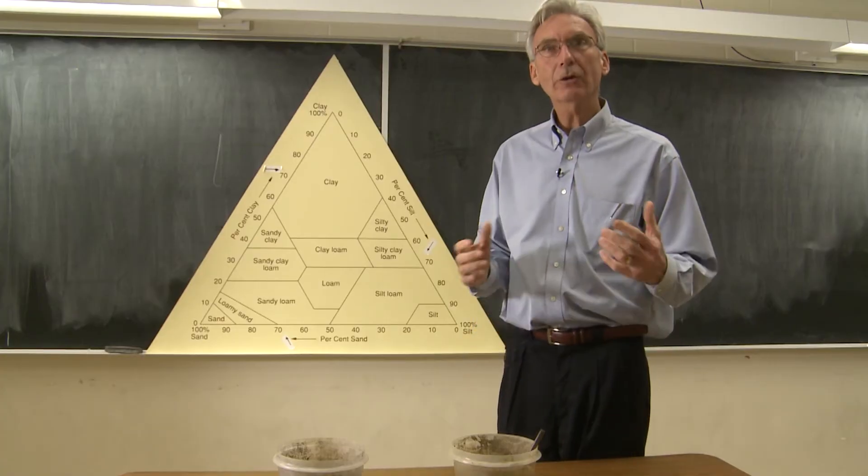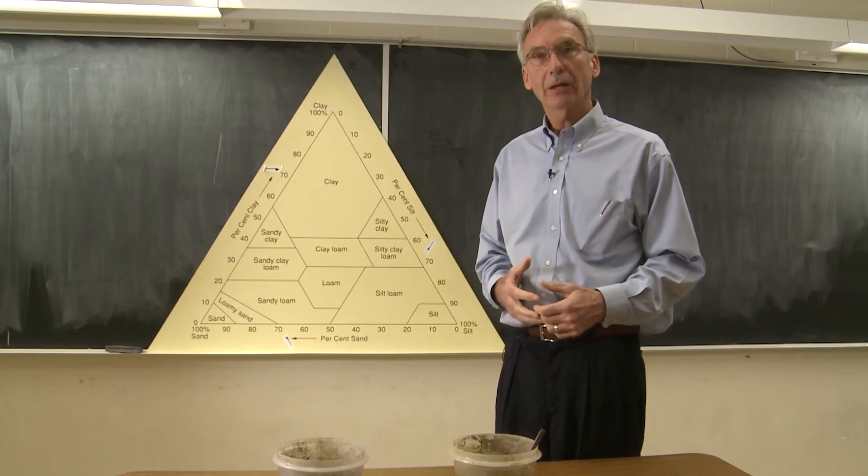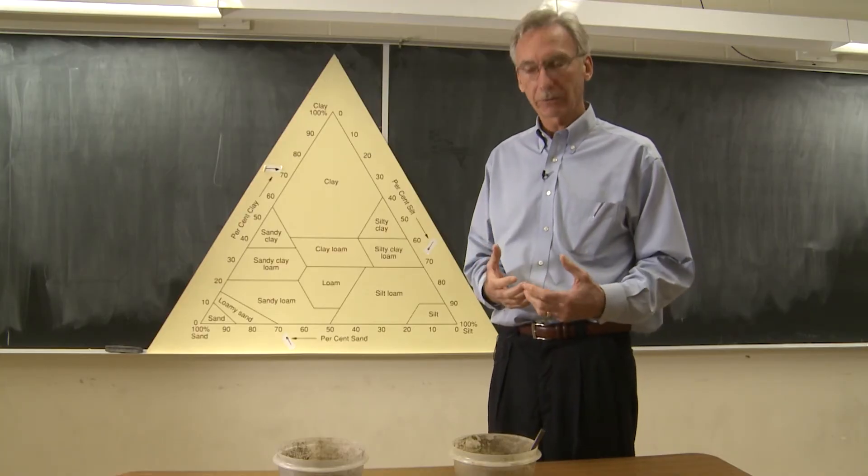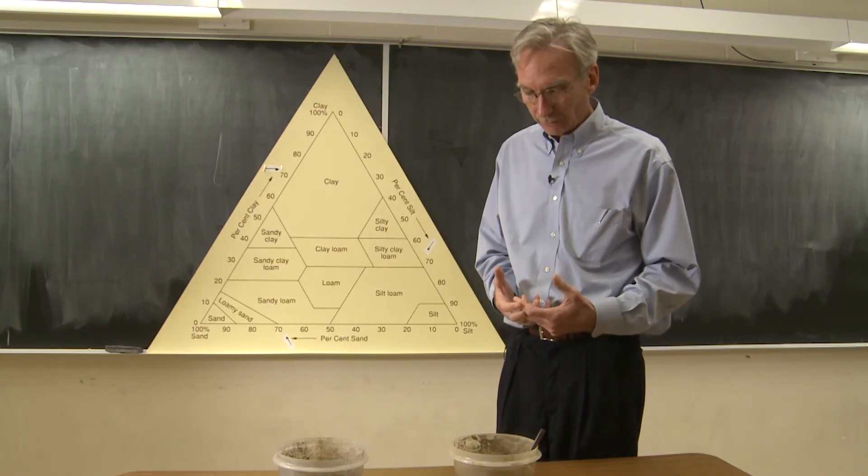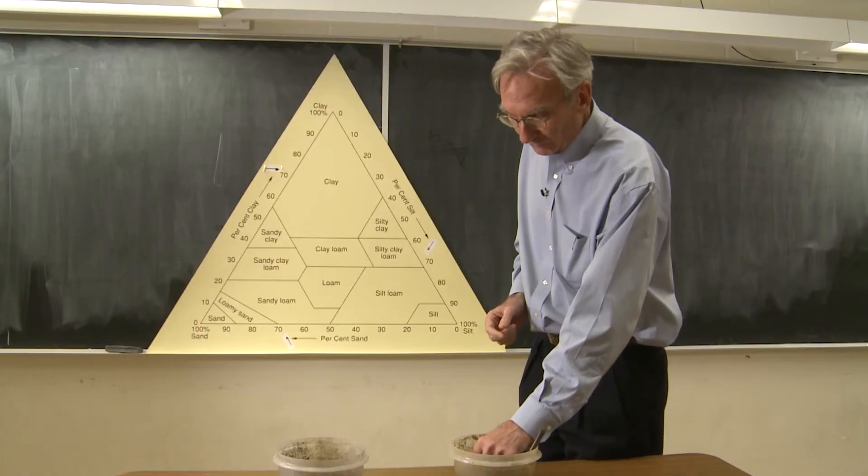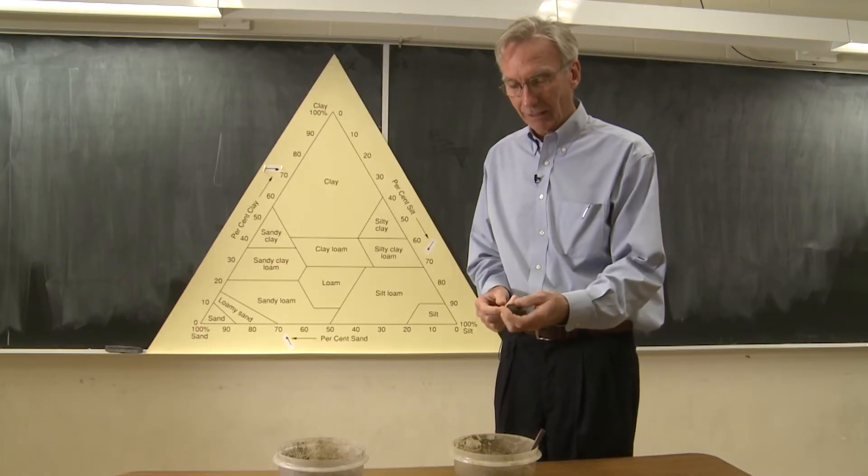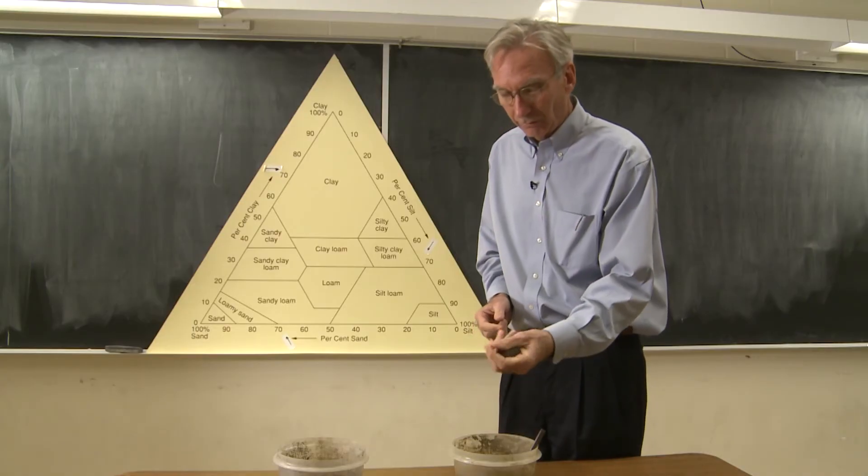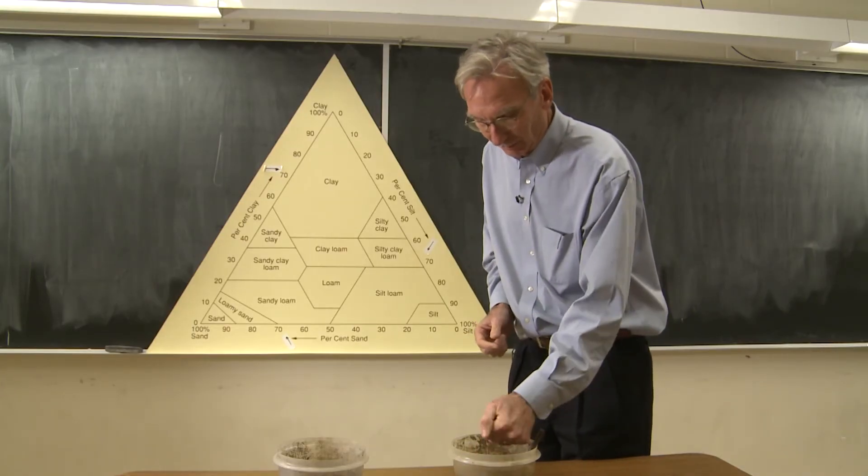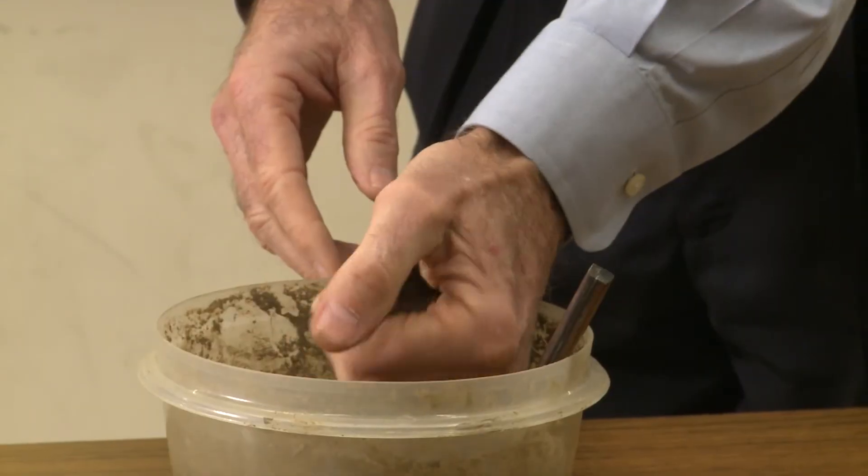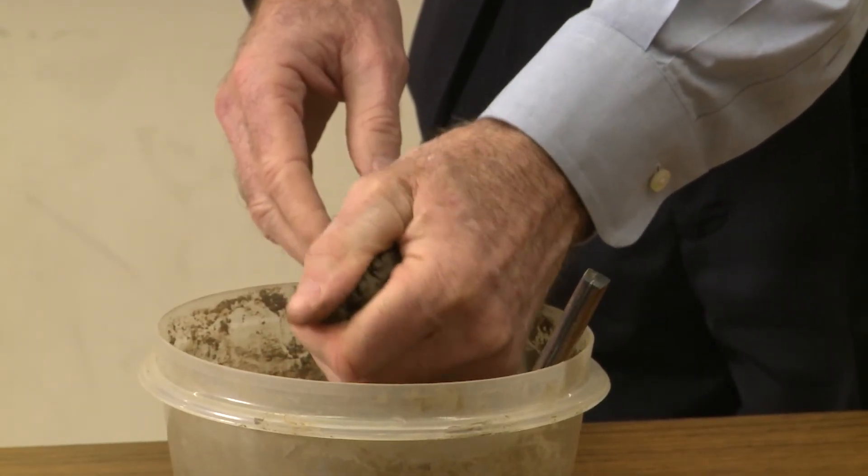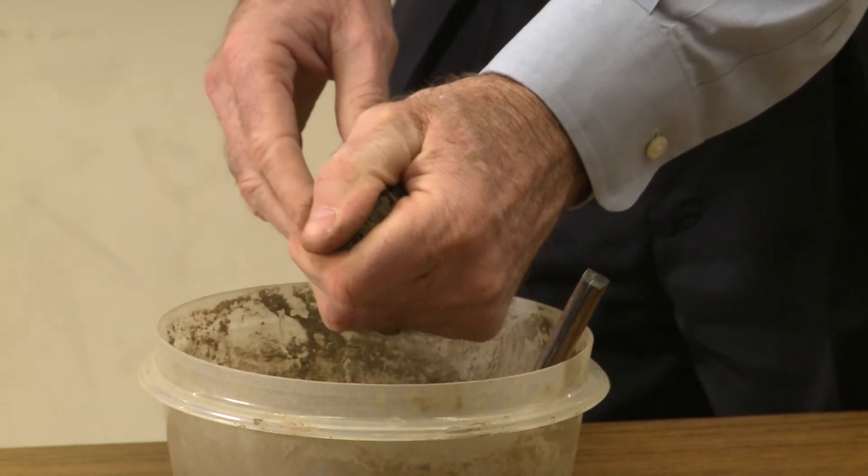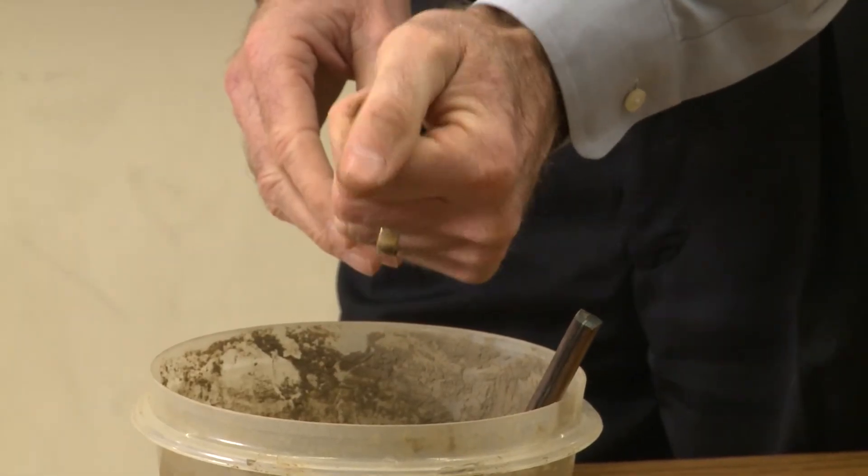So let's go ahead and texture a couple of samples, and I'll show you how to go about actually doing a soil texture. The first key thing about texturing a soil is to make sure you've got enough material in your hand, enough soil. I would say have about a golf ball size clump of soil in your hand.